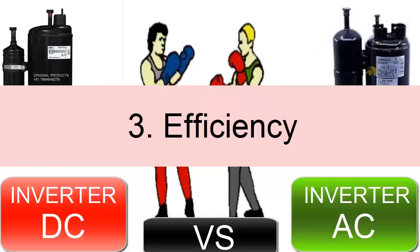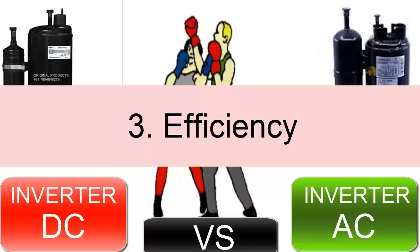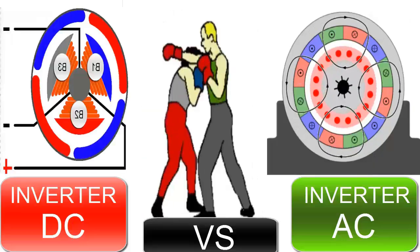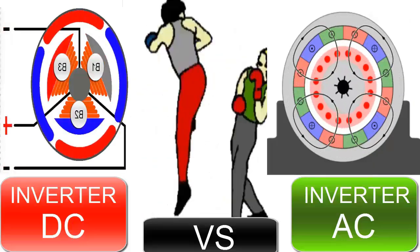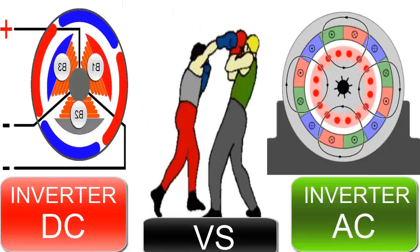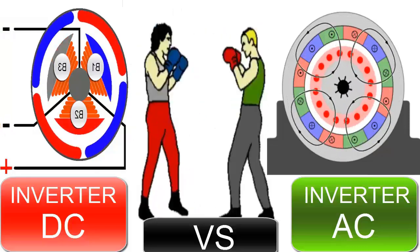3. Due to the nature of the induction motor, DC compressors tend to be more energy efficient than AC compressors, thanks to lower energy loss and better energy conversion.